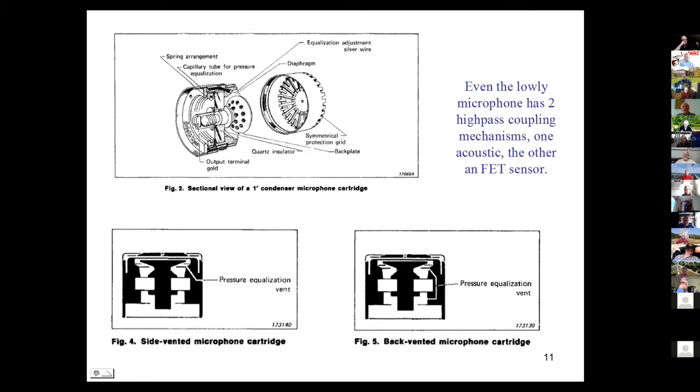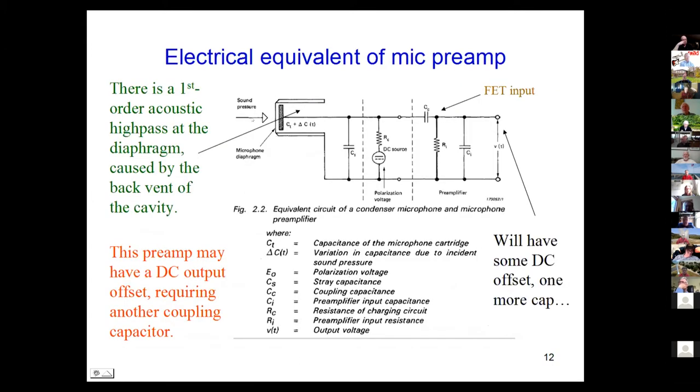So its output falls at very low frequencies due to that vent. In addition, there is a capacitor going to the FET input. This is what Brüel & Kjær gives as the equivalent circuit of the microphone preamp. A lot of studio microphones would have that in the body as well.